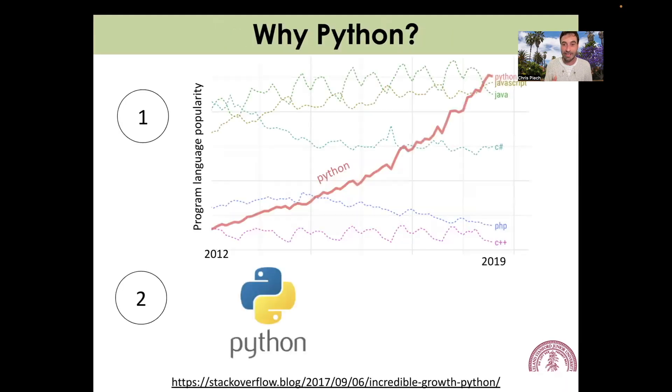There's a lot of programming languages. You might have heard of other ones like C++ or Java. And I wanted to explain quickly why we chose Python. One of the simple answers is, by some definitions, it is the most popular programming language in the world. So there's many ways that you can program, and we're going to teach you one of the most popular ones.